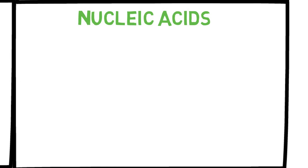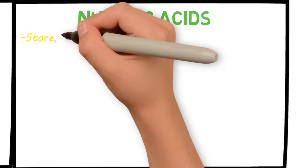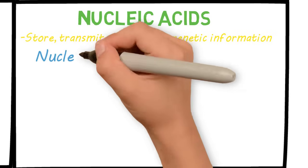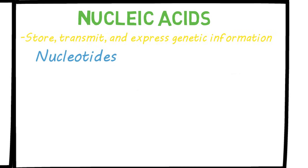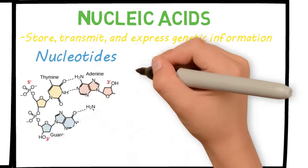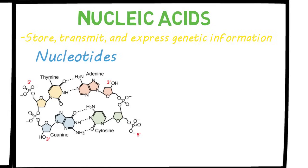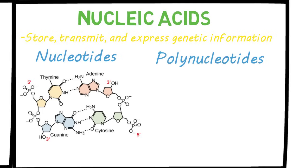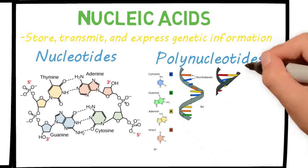And lastly, you have nucleic acids. Nucleic acids store, transmit, and express genetic information. Their monomers are called nucleotides, like adenine, guanine, and thiamine — you may be familiar with these terms from studying DNA and RNA. Their polymers are called polynucleotides, and they are strands of DNA and RNA.